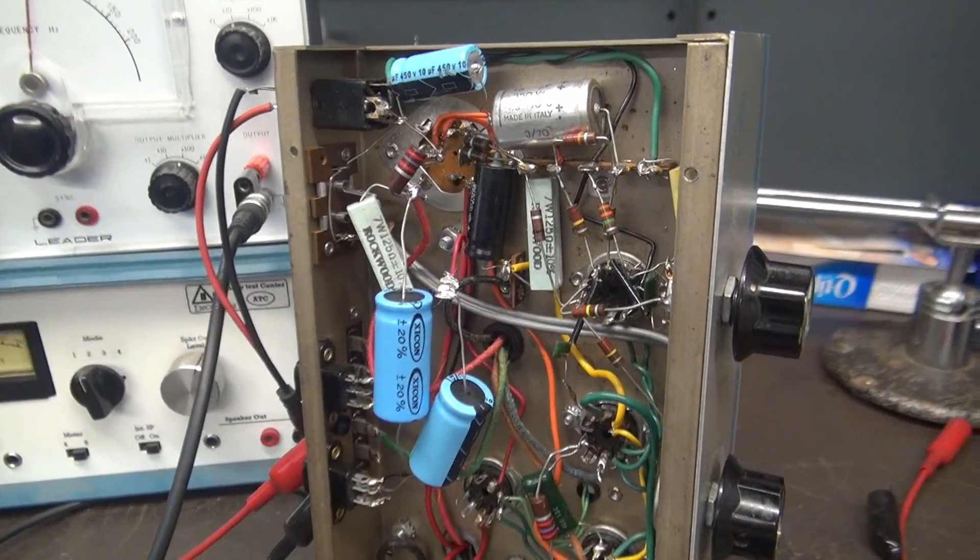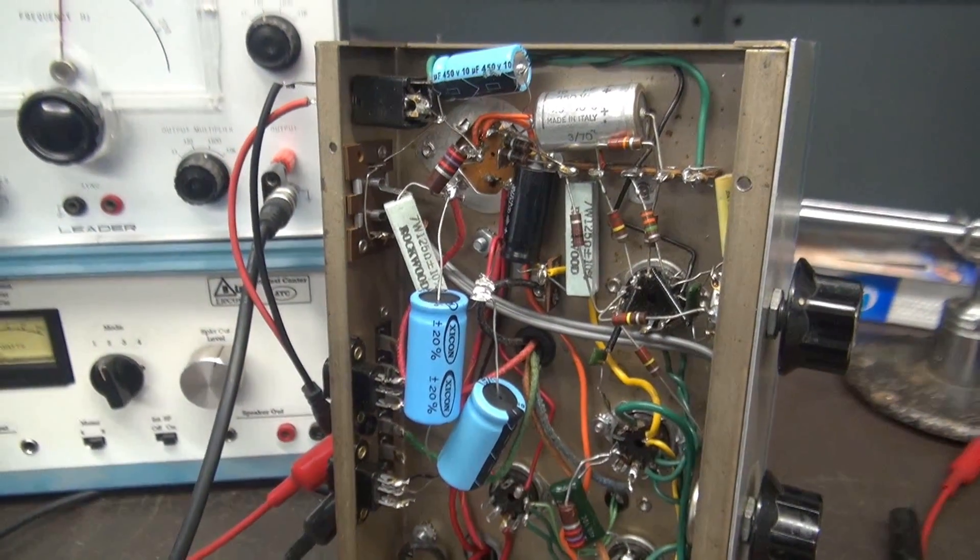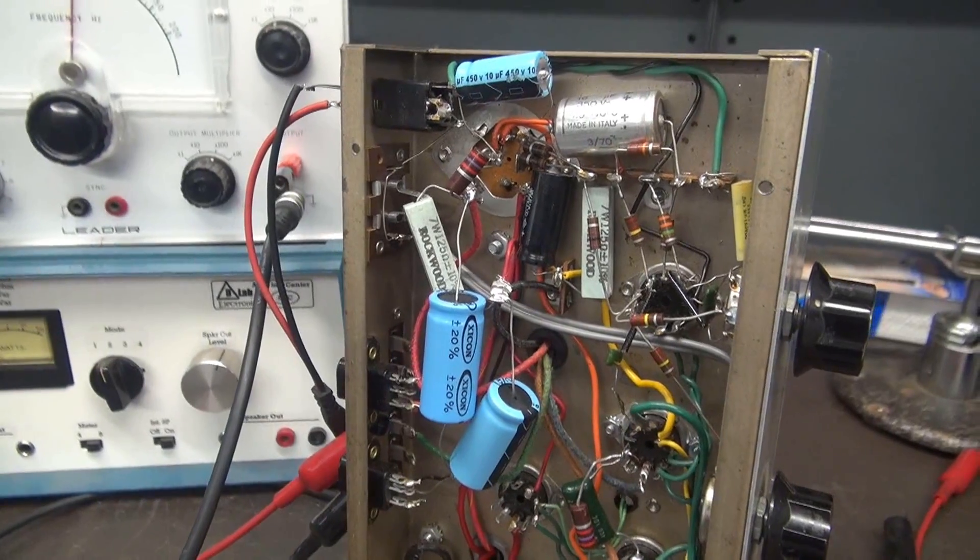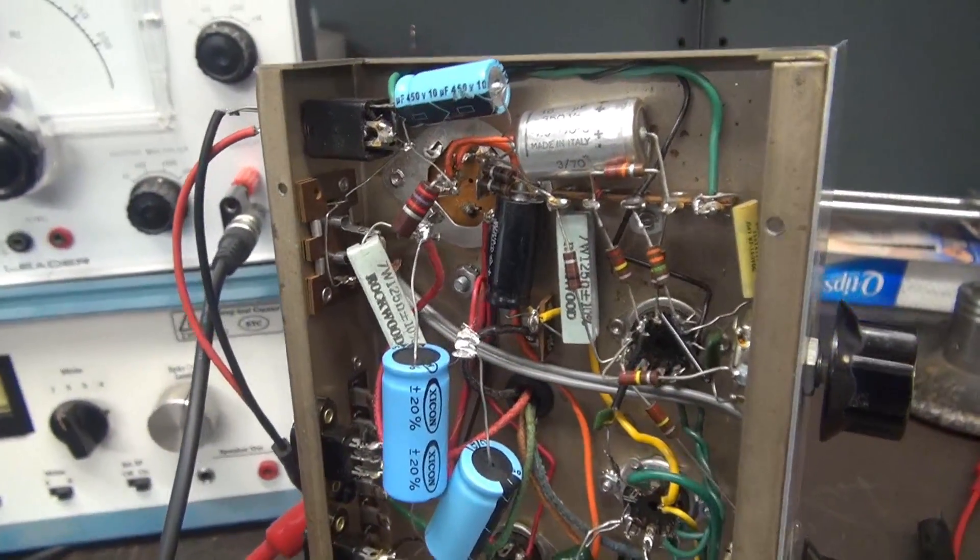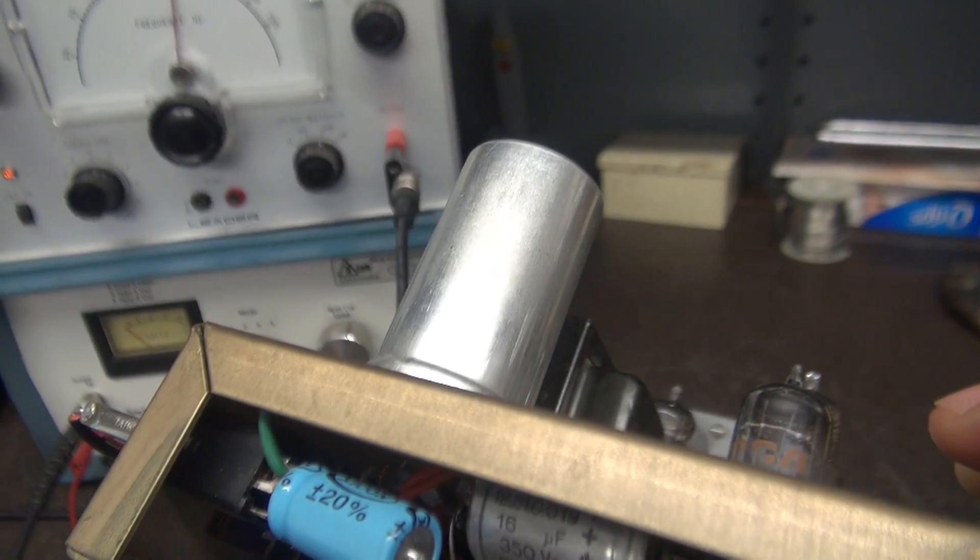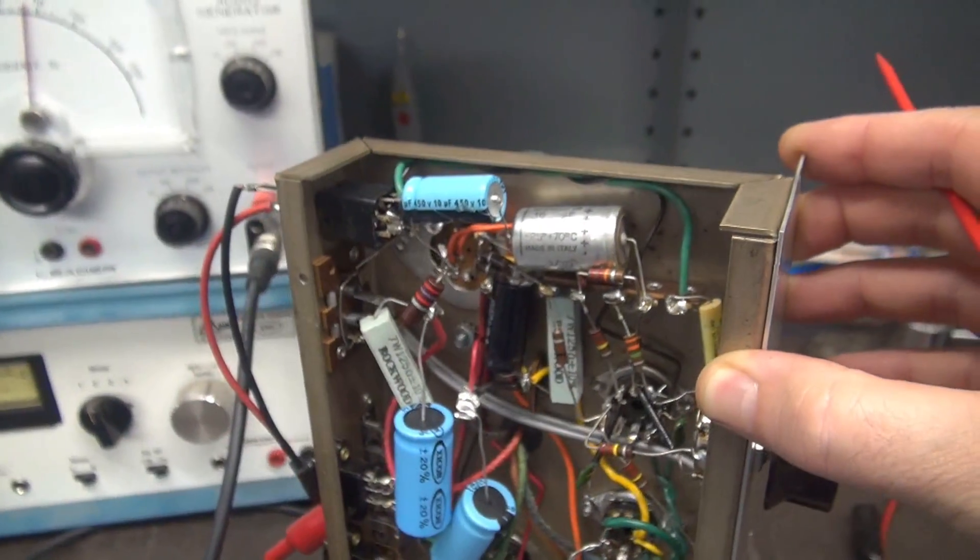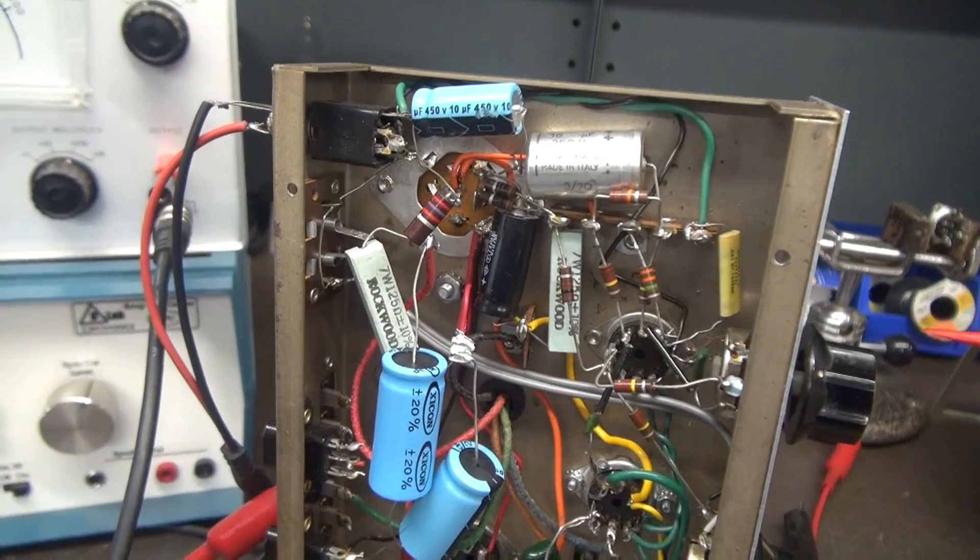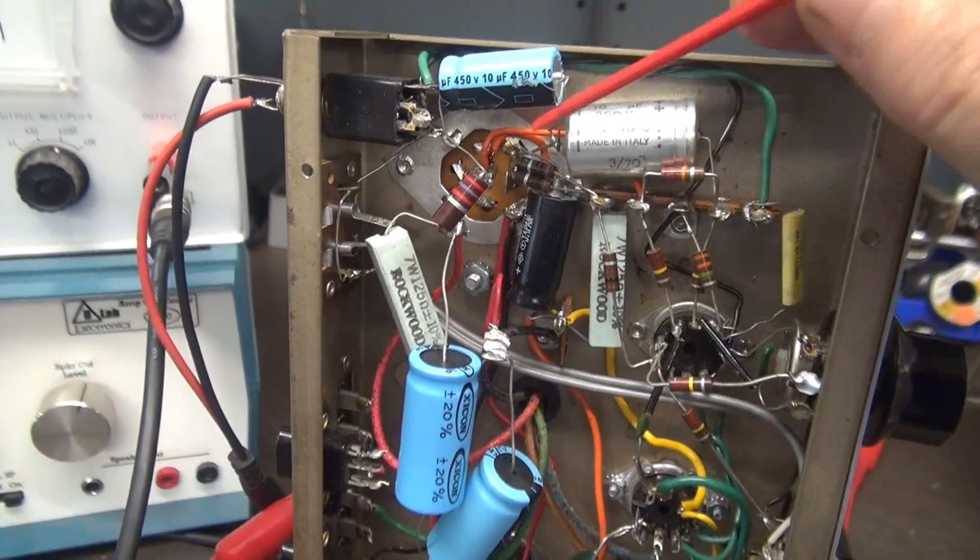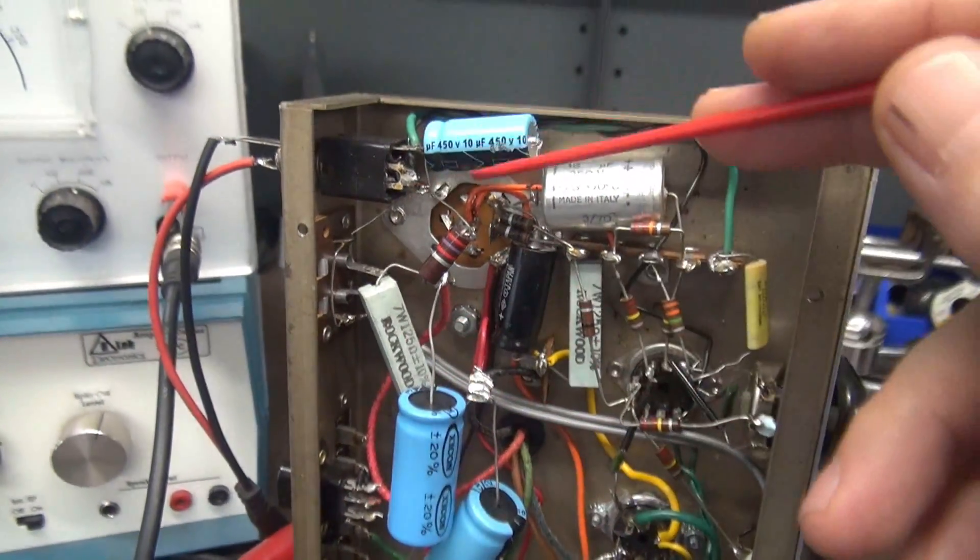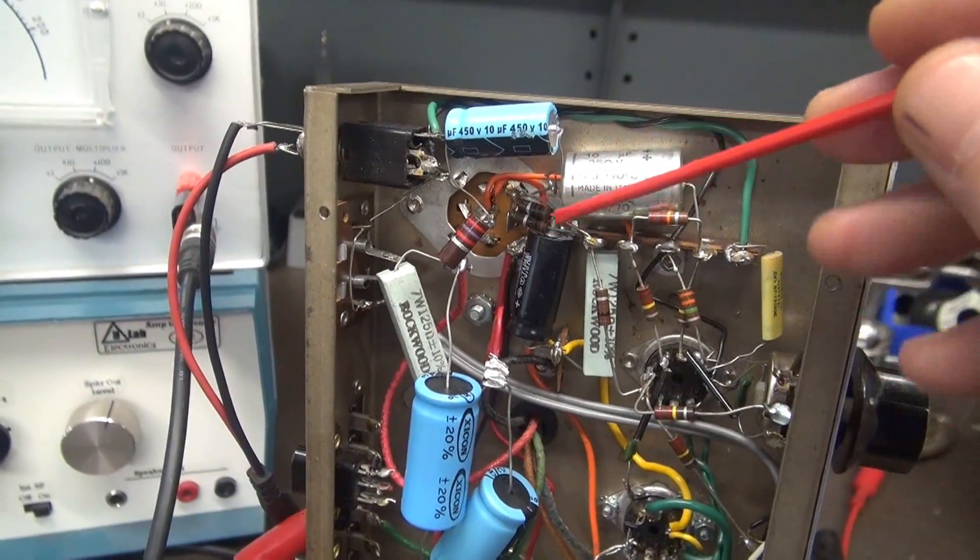Before I begin, I want to give you a close-up view of the power supply situation and explain the do's and don'ts. Number one, this thing originally had this can type filter capacitor that you see in a lot of radios and amplifiers. Well, it obviously went bad at one point in its life.